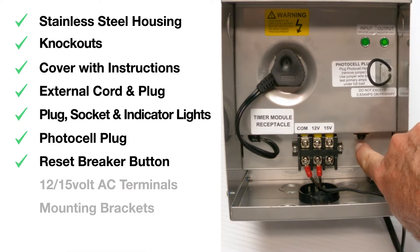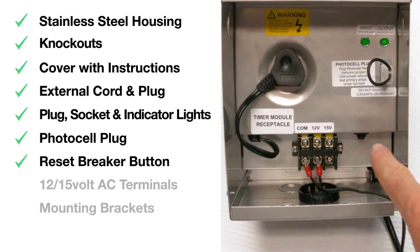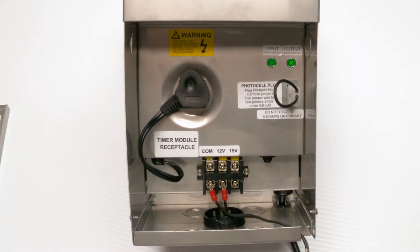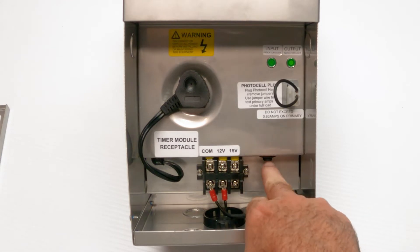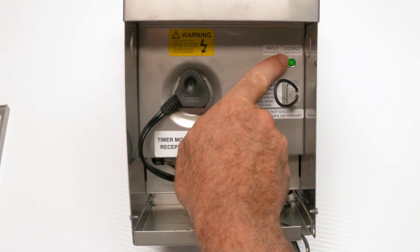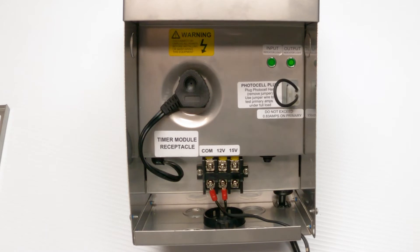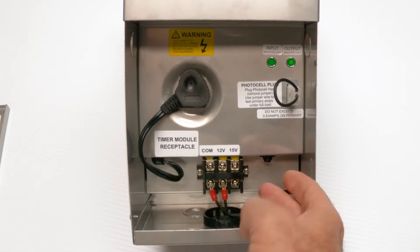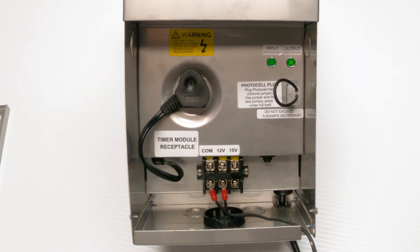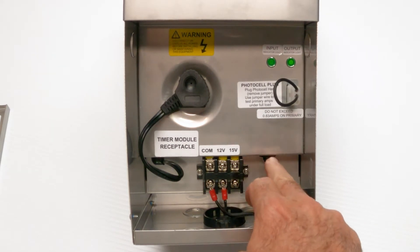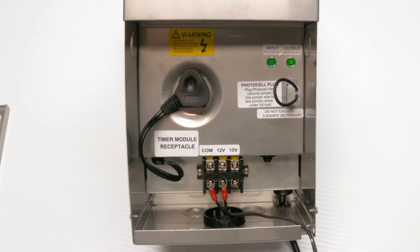So down here is a reset button. And this pops out a little bit when you have a short in your landscape lighting line somewhere. So if that button's out, that means it's not producing electricity, then your lights aren't working. So the test for that is to remove your landscape lighting wire that's going out to the field, remove it here, push the button back in and see if the lights come back on. If when you put this back on, it pops out again, you have a short out in the field and that needs to be addressed.